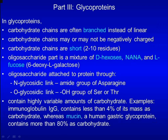Glycoproteins contain highly variable amounts of carbohydrate. For example, immunoglobulin IgG contains less than 4% of the mass as carbohydrate. Mucin, on the other hand, a human gastric glycoprotein, contains more than 80% carbohydrate.